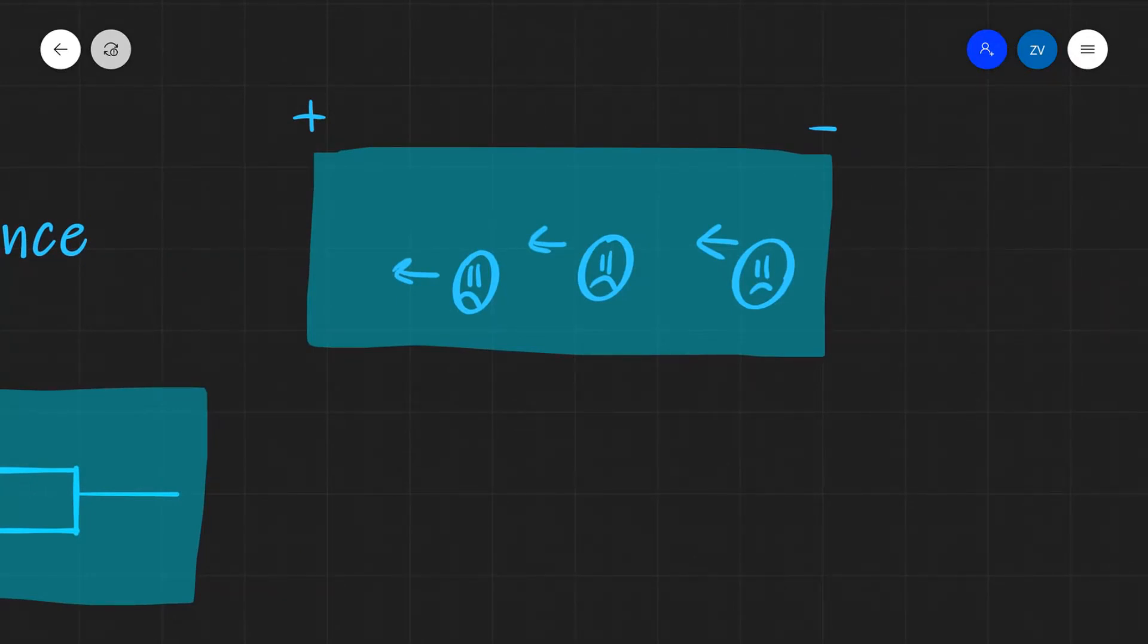In any cell, work is required to move the charges from one end to the other end. For instance, if we're trying to move some electrons or negative ions from the negative end to the positive end, we need to do some work.